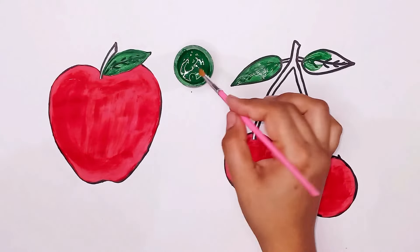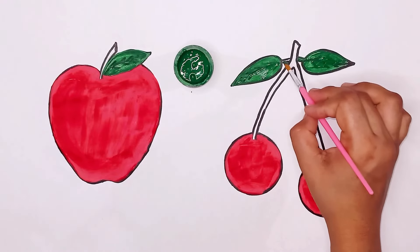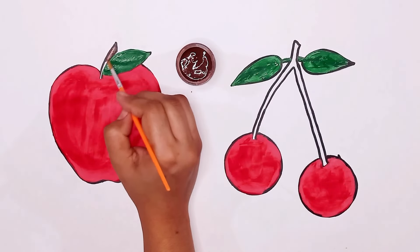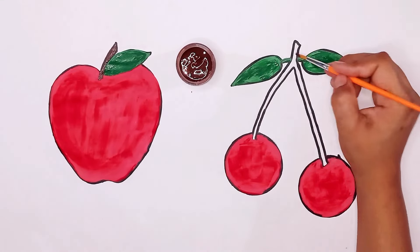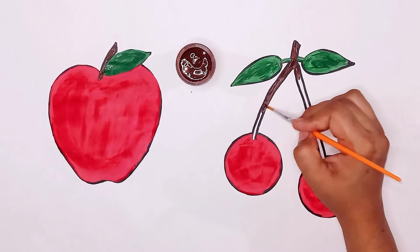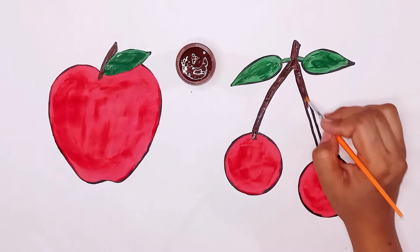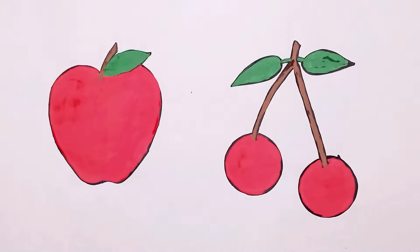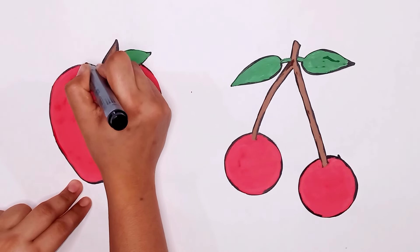A tisket, a tasket, a green and yellow basket. I wrote a letter to my love, and on the way I dropped it. Dropped it, I dropped it, and on the way I dropped it. A little boy, he picked it up and put it in his pocket.